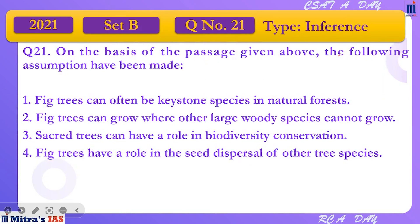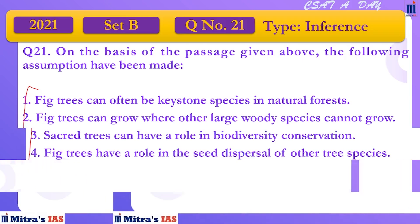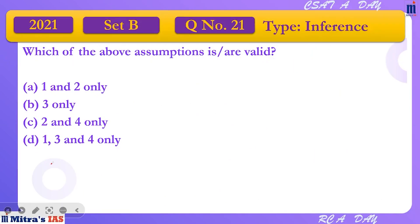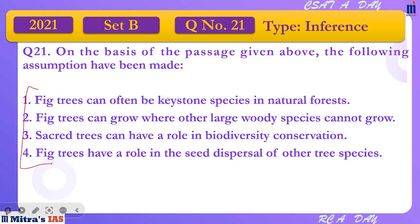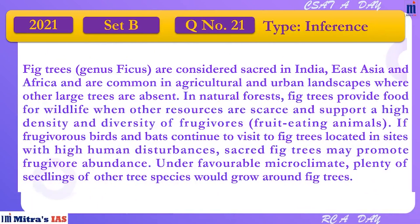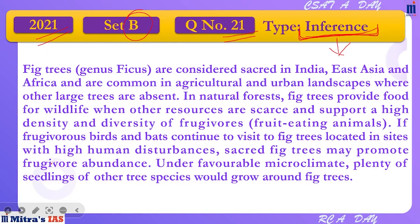Question number 21: on the basis of the passage given above, the following assumptions have been made. Char assumptions yaha pe li gayi hain, aur inme se konse assumptions are correct — that you have to point out. Which of the above assumptions is or are valid? You can pause the video, attempt the question, and then get back.